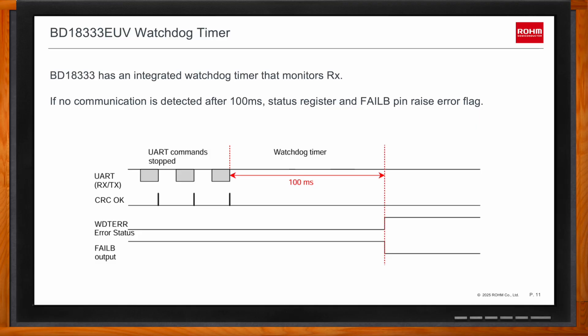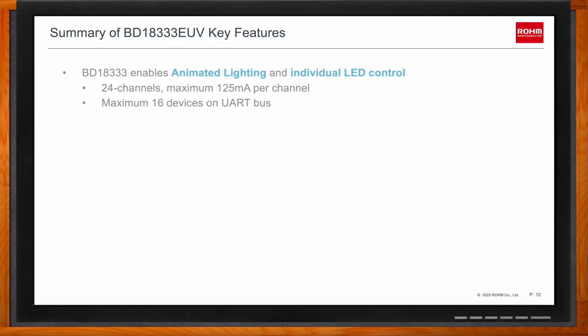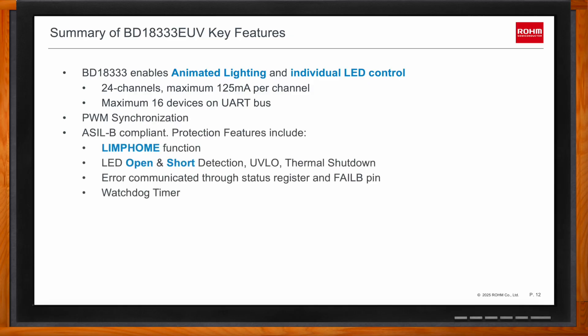To summarize: the BD18333 enables animated lighting and individual control of up to 384 LED segments when using the maximum 16 devices on one bus. It is capable of both PWM and DC dimming control, has PWM synchronization for precision in animation, and is ASIL B compliant — featuring a limp home mode and several other protection features. You can find the datasheet on the Rohm website, along with an application note that takes you step by step through the design process.